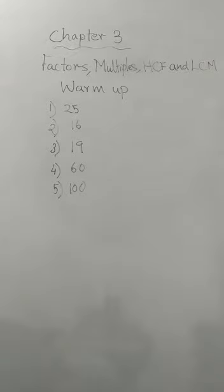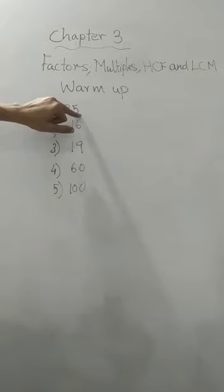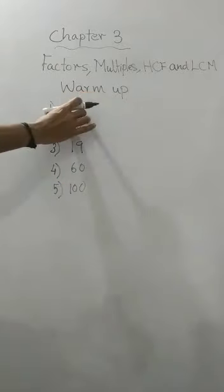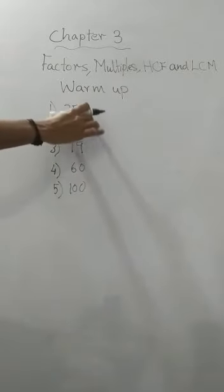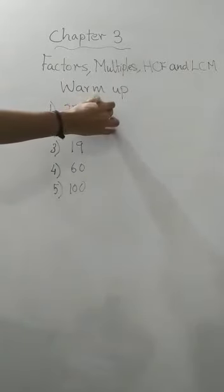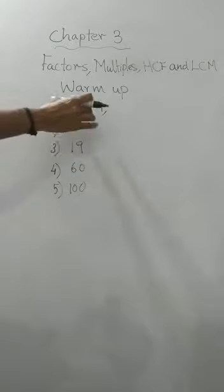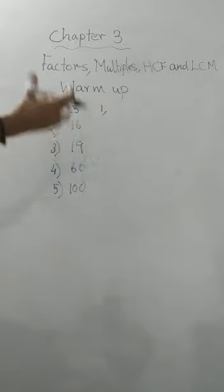Write all the factors of the following numbers. Please take page 107 of your textbook. We will do this warm up in your textbook itself. These are the 5 numbers given. What is meant by a factor? A factor of a number divides it exactly. 1 is a factor of all numbers. You can divide any number by 1.